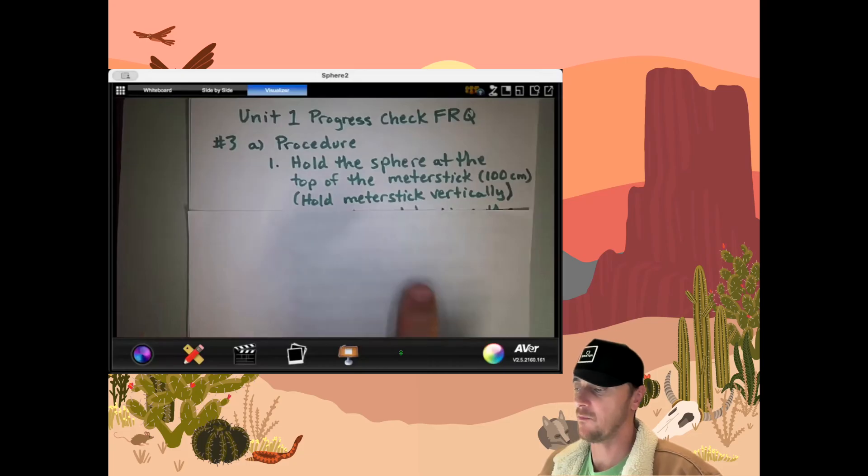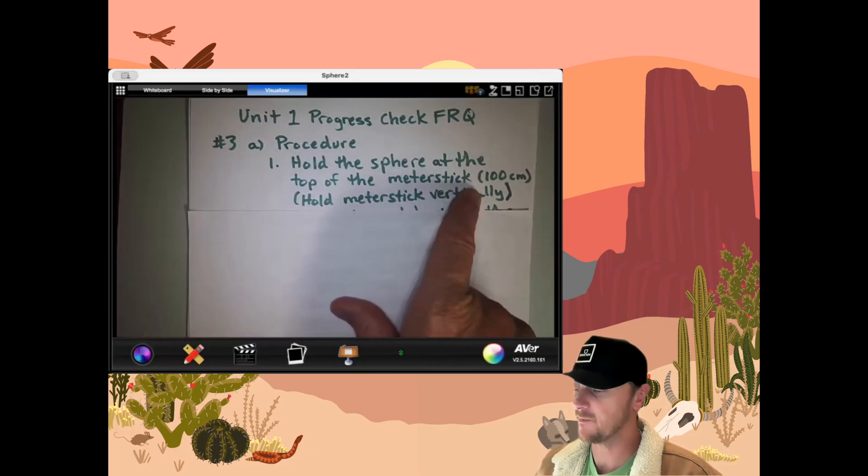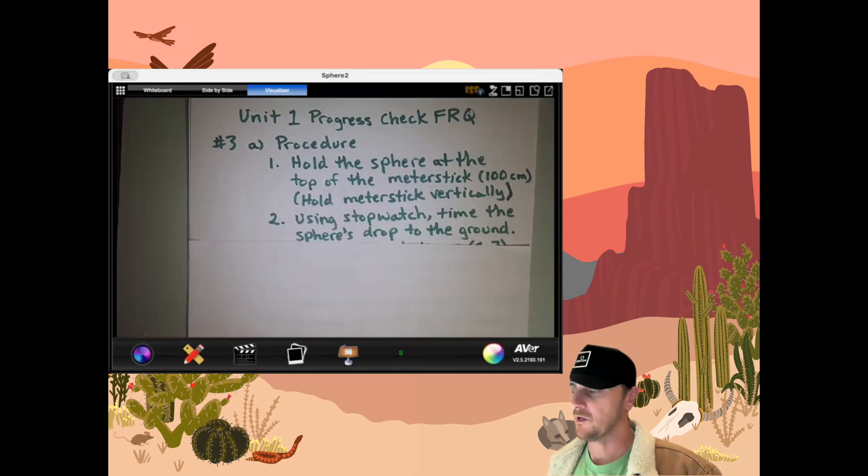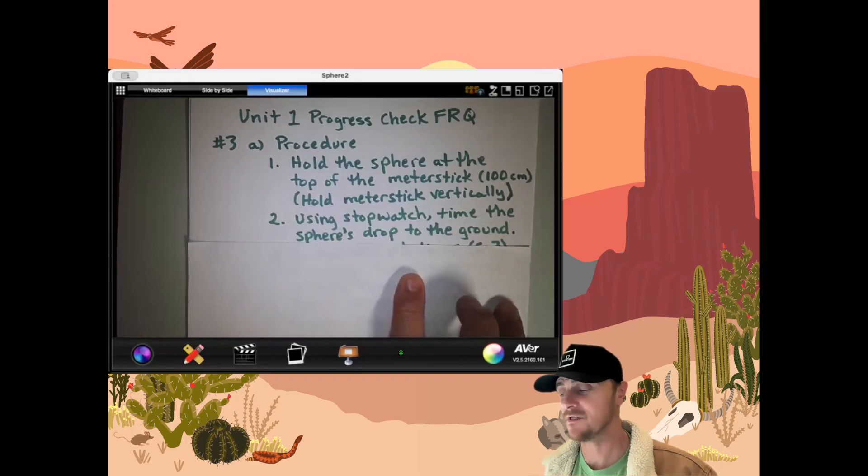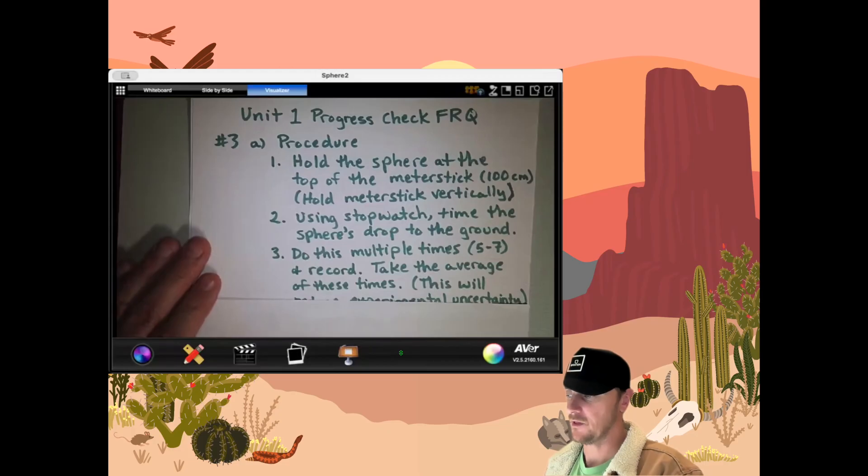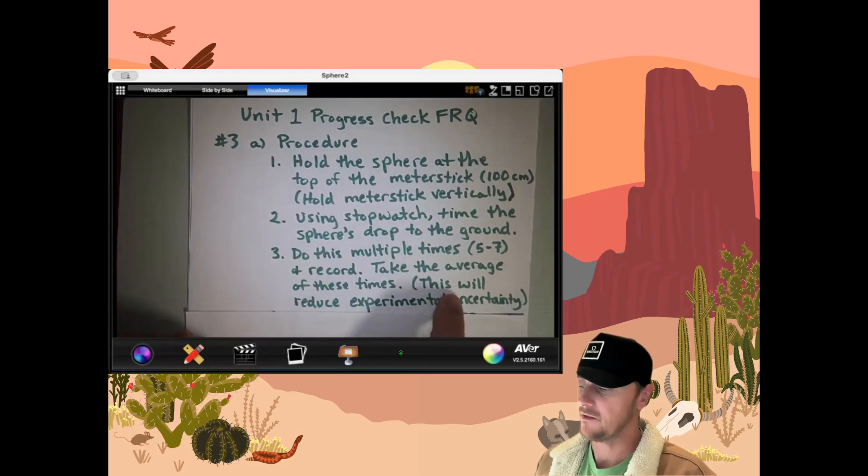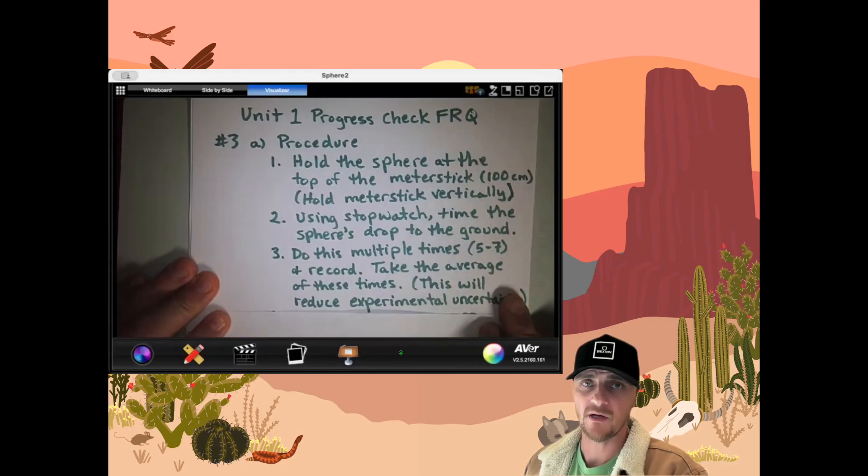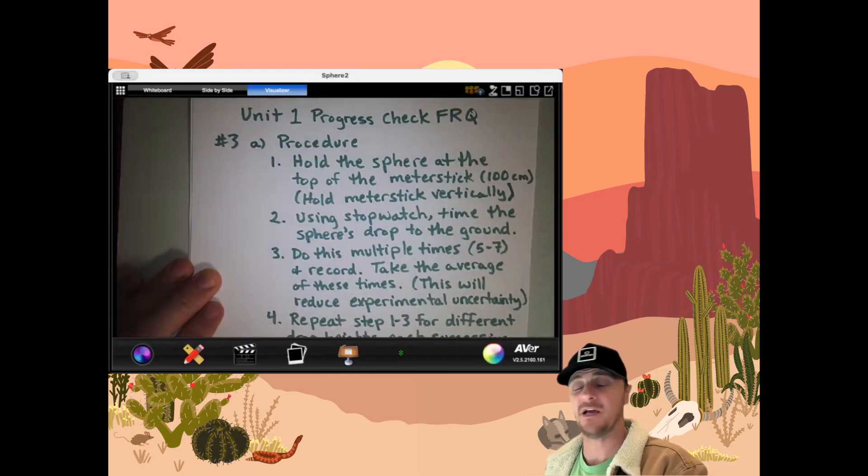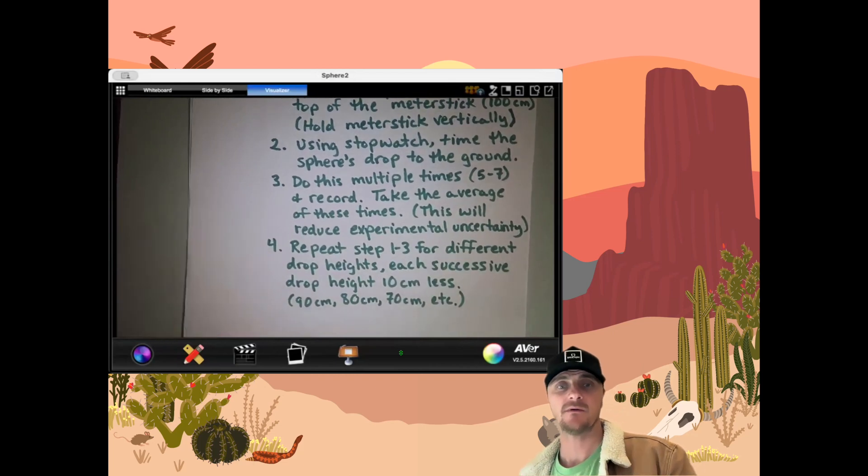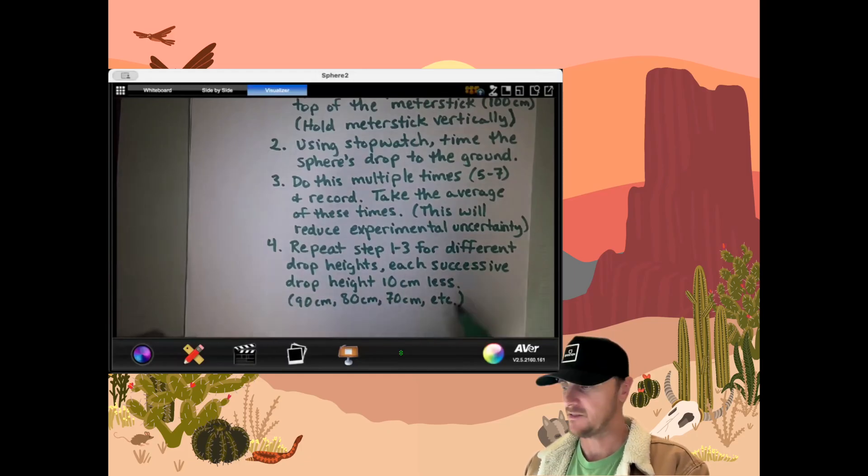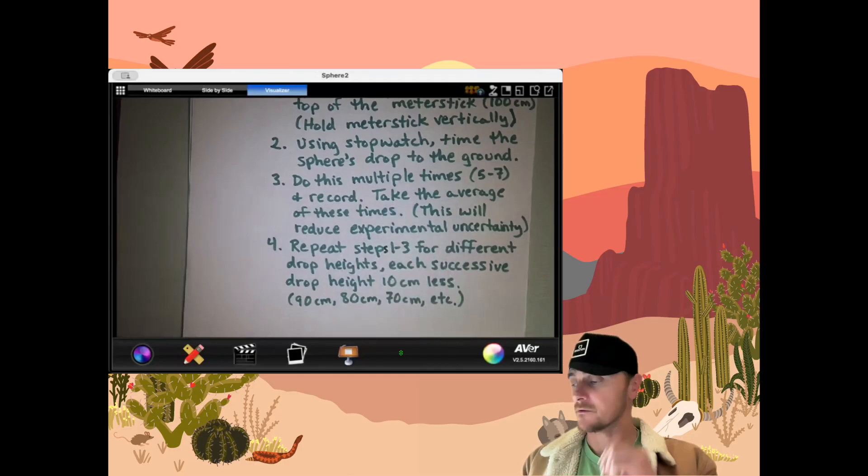Okay, so let's take a look. We've got step one, hold the sphere at the top of the meter stick, 100 centimeters above the ground, and we want to hold that meter stick vertically. Don't know if you have to say that, but let's play it safe and say it. Then we're going to use a stopwatch to time the spheres drop to the ground, and if we just did this once, we would not be reducing experimental uncertainty. So step three, do this multiple times, and record. Take the average of these times, and I'm making sure they understand this will reduce the experimental uncertainty. Now that's essentially the procedure, just steps one through three. But that's for one height, and we want to do this for multiple heights so we have enough data for a graph. So step four is repeat steps one through three for different drop heights. Each successive drop height 10 centimeters or less. And then I stated some sample heights so the grader can see those.